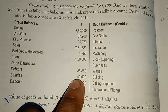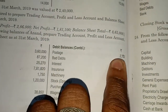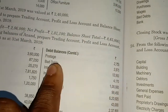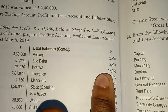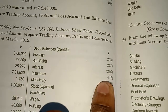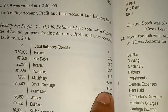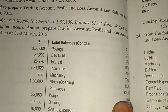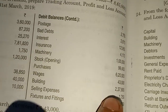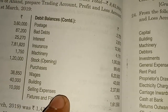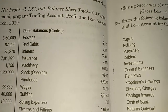Further debit balances: Salaries 40,000; Discount 10,000; Postage 2,730; Bad Debts 2,870; Interest 12,950; Insurance 4,170; Machinery 1,00,000; Opening Stock 99,450; Purchases 6,20,920; Wages 43,000; Building 2,37,800; Selling Expenses 1,750; Fixture and Fitting 1,61,550.